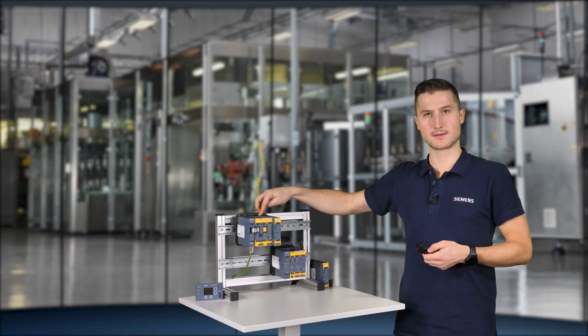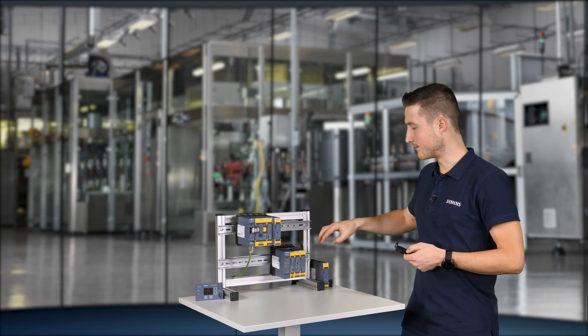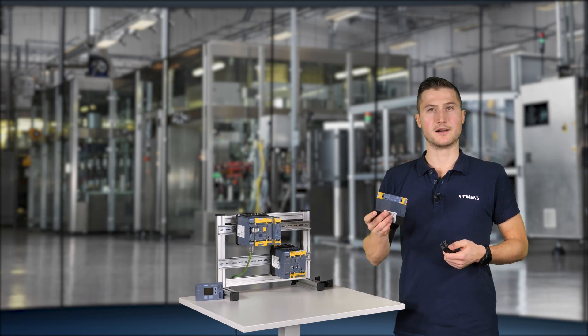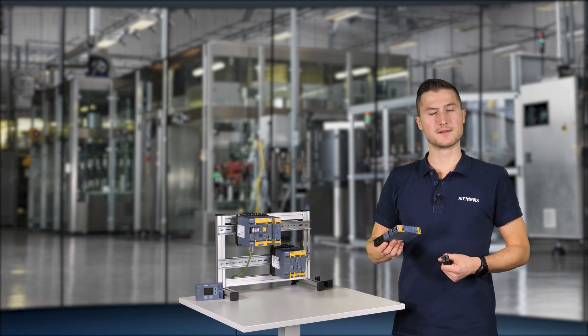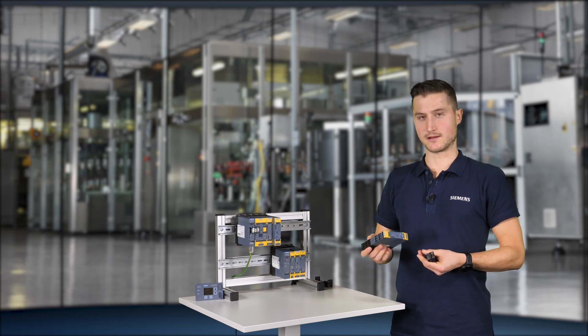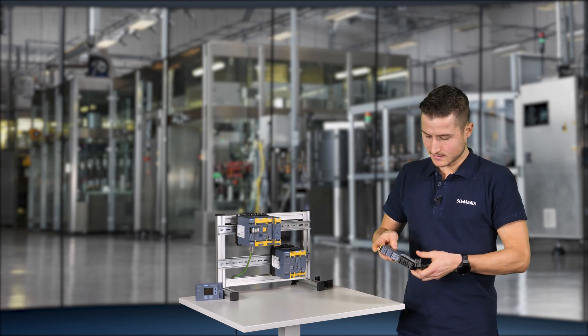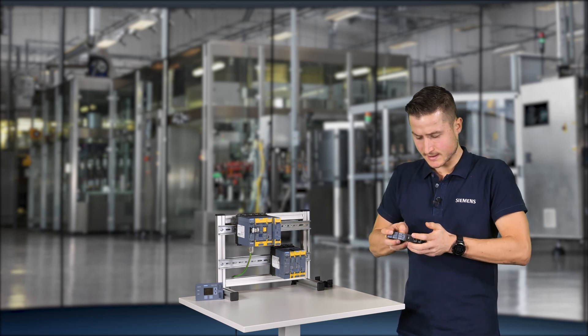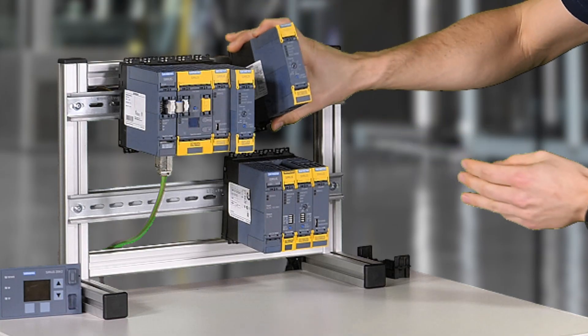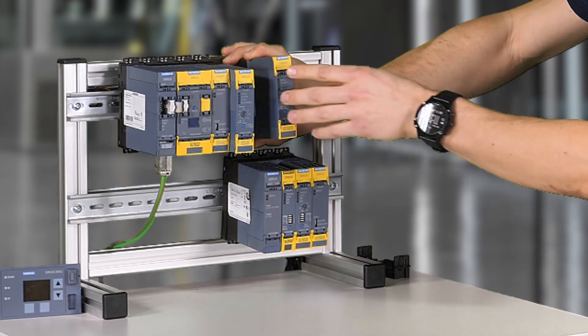In addition to the 3SK1-2 output expansion for contact multiplication, the 3RM1 motor starters are available for seamless integration into the main circuit, also in a fail-safe version. They are just clicked on the device connector and can be added to both systems, 3SK2 or 3SK1 advanced.